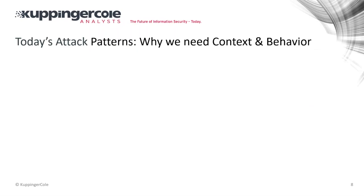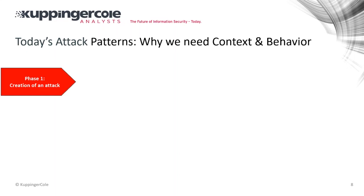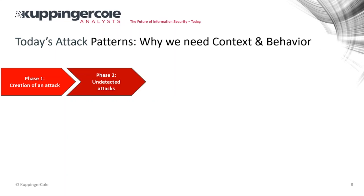I want to start with a look at today's attack patterns and why context and behavior are so important — and also why identity and access are so important. When we look at an attack pattern, someone creates the malware or whatever approach is used. Then we have a phase of undetected attacks — attacks happening in our business that we may not be aware of. The attacker on average is in 200 days before being detected.